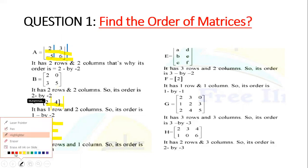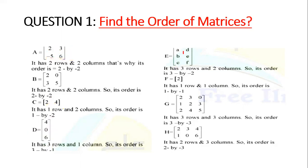Now let's go to part E. In E, we have number of columns 1 and 2, and the number of rows are 1, 2, and 3. So the order is 3×2.